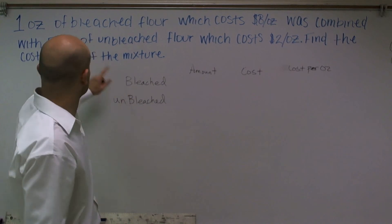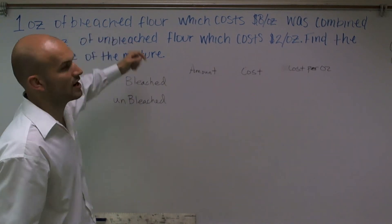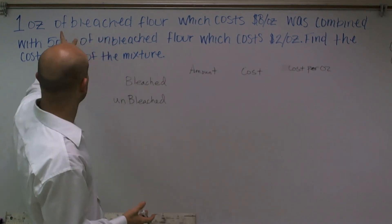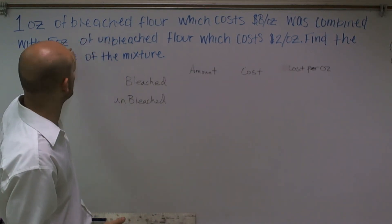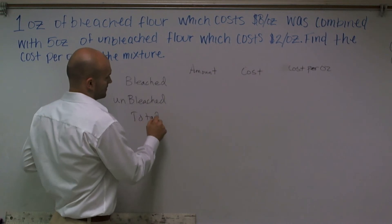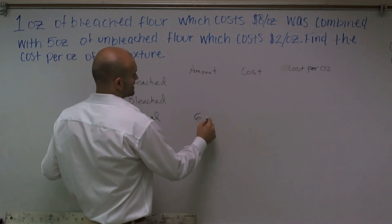So if we're looking at this, they say there is one ounce of bleached flour. Now remember they said mixture. So the total amount, if there was one ounce of bleached and five ounces of unbleached, that means we have a total of six ounces.